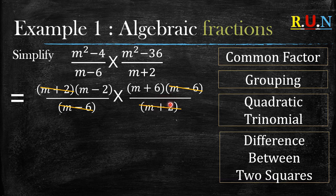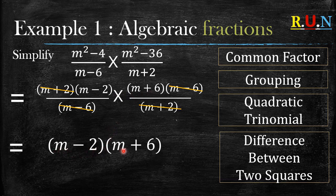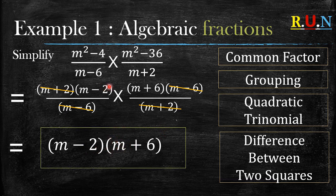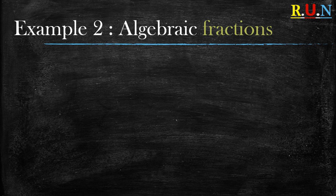Now that we are done canceling, let's look at what we are left with. We have no denominator remaining, but in the numerator we have two brackets: m minus 2 and m plus 2. We write them just the same way they are, next to each other, and just like that you have simplified this algebraic fraction.